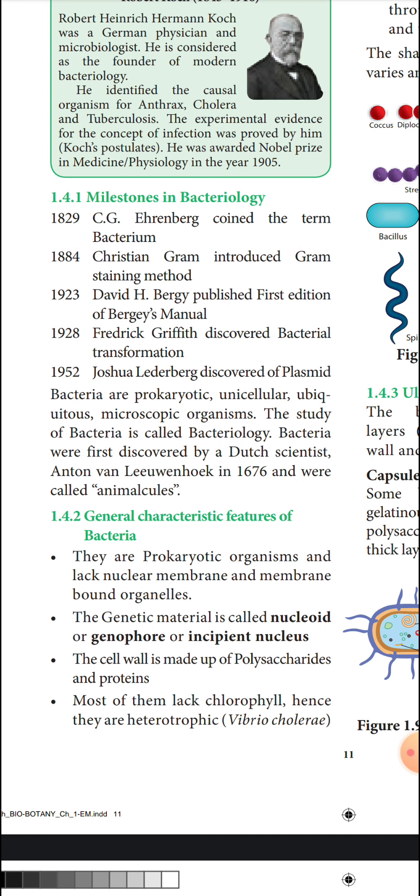The cell wall of bacteria is made up of polysaccharides and protein. The cell wall contains polysaccharides, which are a type of carbohydrate, along with protein components.